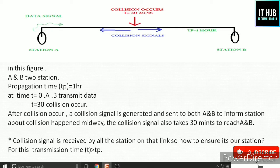For example, if A and B are both active with a transmission time of 2 hours and a propagation time of 30 minutes, they will remain active in the channel. If their data collides after 30 minutes, they will be aware of the collision because they are still transmitting. The solution is that transmission time should be more than propagation time, ensuring the node is still active when the collision signal returns.